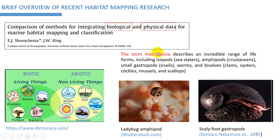What is macrofauna? Macrofauna is the range of life forms — very small animals that live on the seafloor. For example, the ladybug amphipod and the scalipus gachopus are very, very small animals.